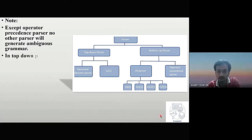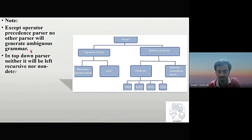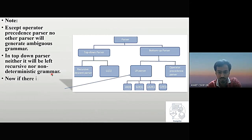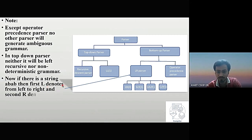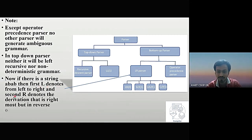Except the operator precedence parser, no other parser will generate ambiguous grammar. Top-down parsers handle neither left-recursive nor non-deterministic grammar. For a string ABAB, the first L denotes scanning from left to right and the R denotes the derivation, which is rightmost but in reverse order.